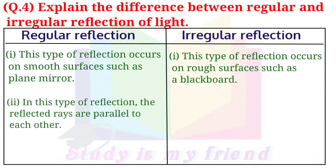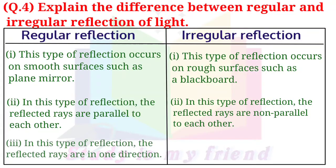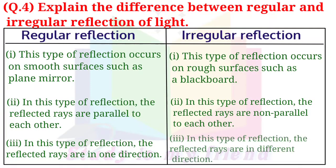In regular reflection, the reflected rays are parallel to each other and travel in one direction. In irregular reflection, the reflected rays are non-parallel to each other and travel in different directions.